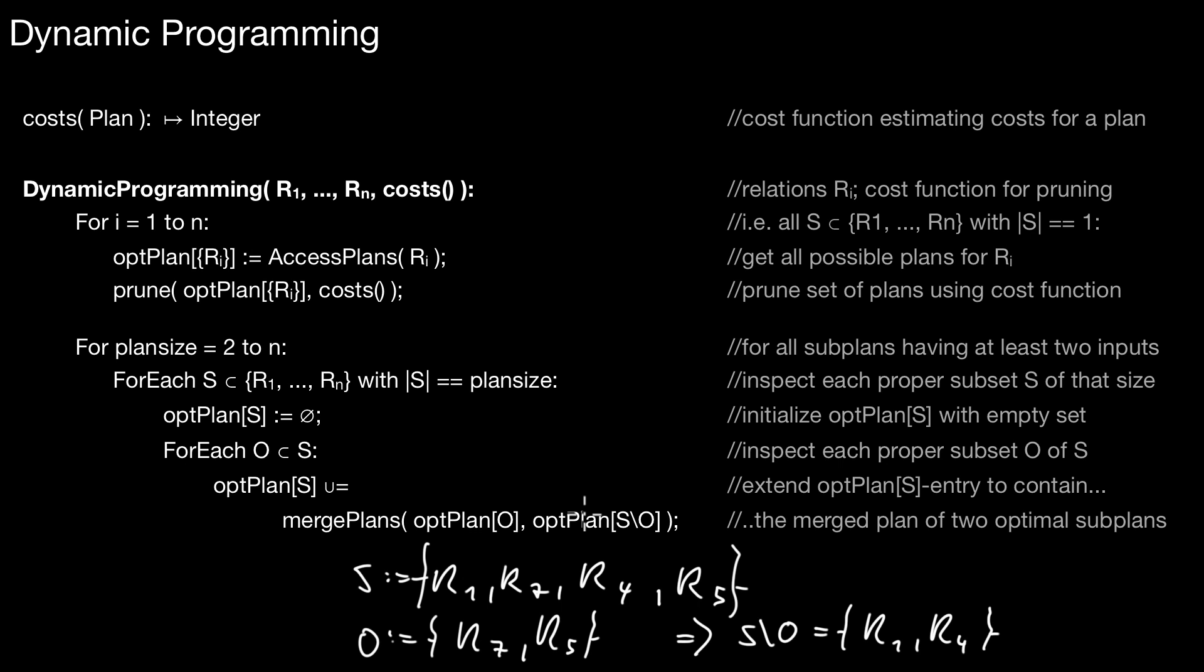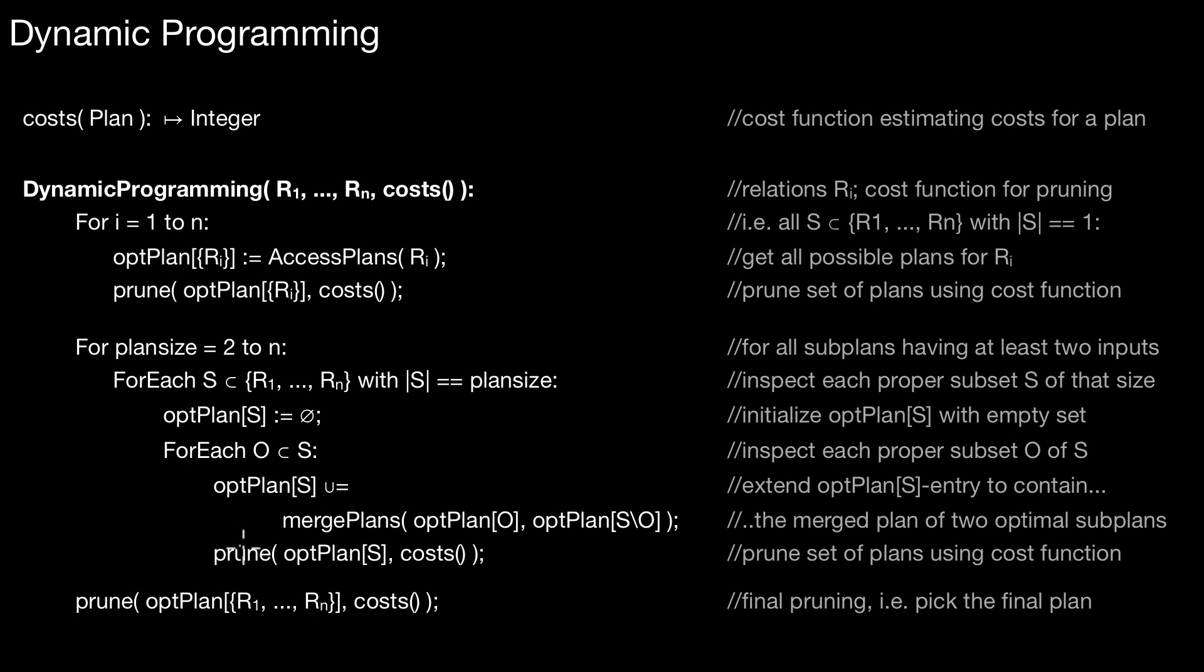Here, the optimality principle kicks in saying, once I have the optimal subplan for this subset and I have the optimal subplan of this subset, I can somehow combine them. If you have a joint condition among the two, then you can use the joint condition. If you don't, you use a cross product. That is the rule. Here it's just a matter of merging those two subplans into a bigger plan. And then you append that to this entry 4S. So, extend the entry 4S. Here, in this line, you prune again. Once you're done with finding those plans, you only take the one with the lowest cost.